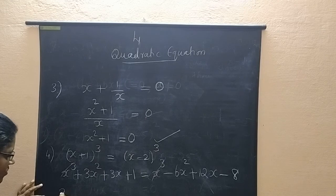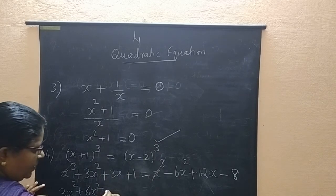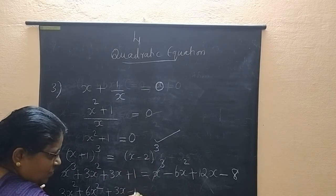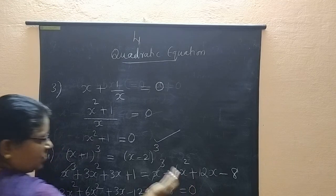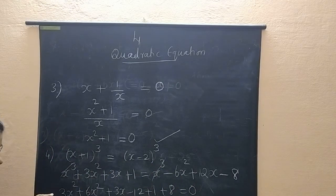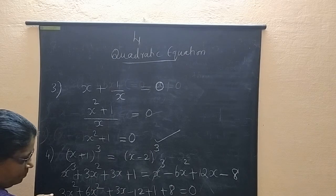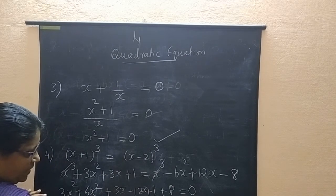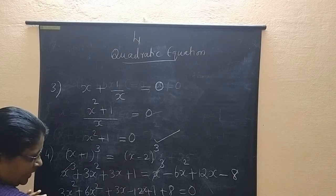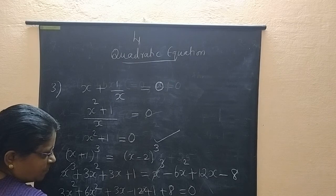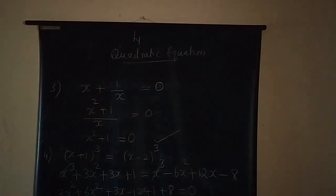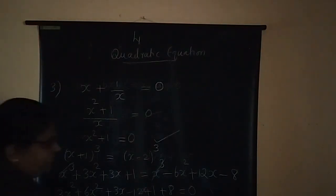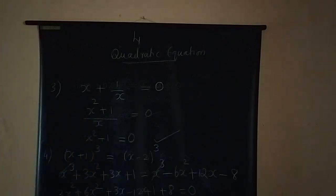After cancelling x³, we simplify the remaining terms. 3x² + 6x² = 9x², and 3x - 12x = -9x, and 1 + 8 = 9, giving 9x² - 9x + 9 = 0. The degree is 2, so we can conclude that this is also a quadratic equation.